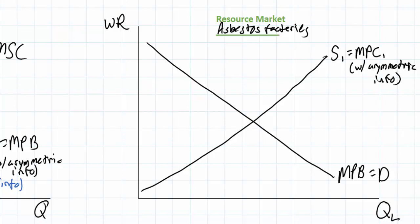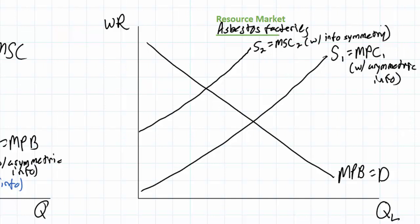Let's compare this to the supply of workers that would have been willing to work in these factories if there had been more symmetric information — more perfect information about the true harmful nature of the employment. If workers had been more aware of the toxic chemicals they would be exposed to, there would be a smaller supply of willing workers to work in these factories. I'll call this S2, which represents the marginal social cost of employing workers — this is with information symmetry.